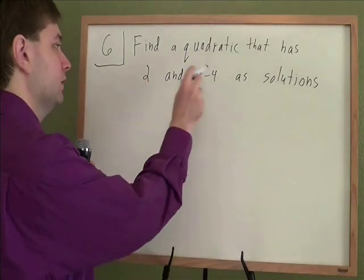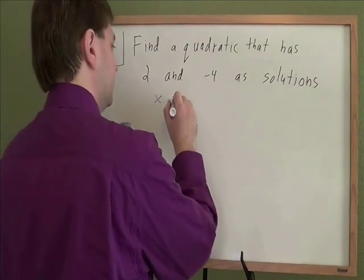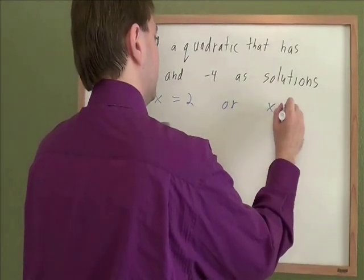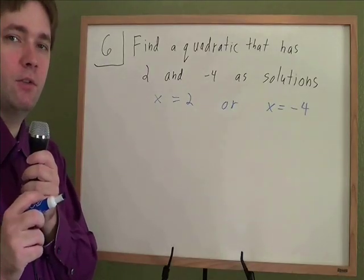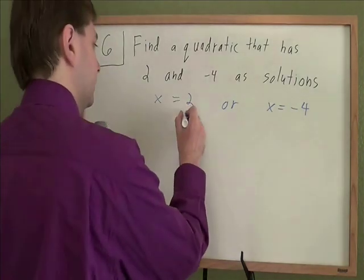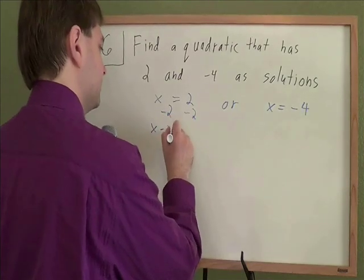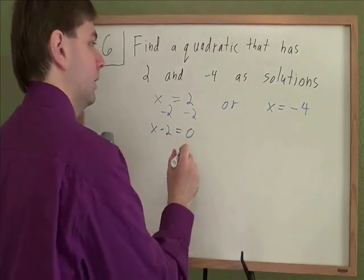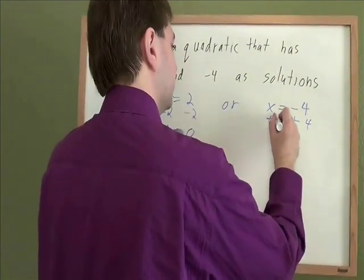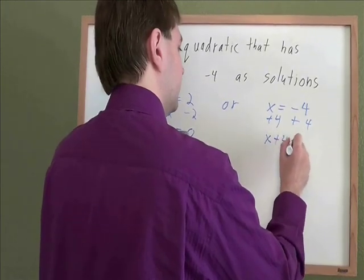If a quadratic has 2 and negative 4 as solutions, what does that mean? Well, that means x could equal 2 or x could equal negative 4. And from here, we're basically going to go through the steps to solve a quadratic equation, but do it backwards. So if you've got x equals 2, that's the same as having x minus 2 is equal to 0. If you have x equals negative 4, that's the same as x plus 4 is equal to 0.